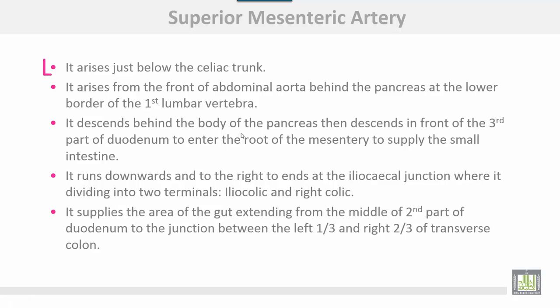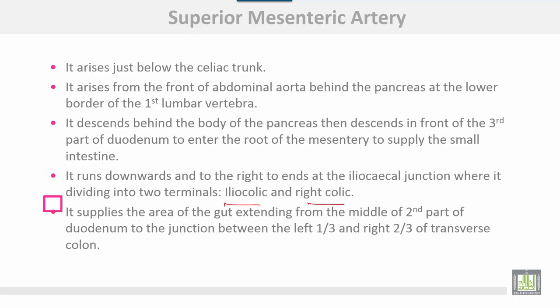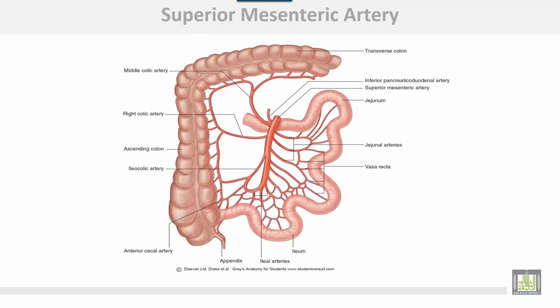The superior mesenteric artery arises just below the celiac trunk, from the front of the abdominal aorta behind the pancreas at the lower border of the first lumbar vertebra. It descends behind the body of the pancreas, then descends in front of the third part of the duodenum to enter the root of the mesentery to supply the small intestine. It runs downwards and to the right to end at the ileocecal junction, where it divides into two terminals: ileocolic and right colic branches. It supplies the gut from the middle of the second part of the duodenum to the junction between the left third and right two-thirds of the transverse colon.